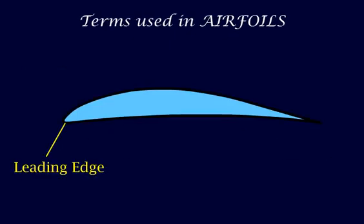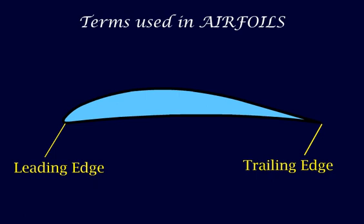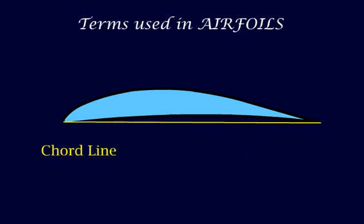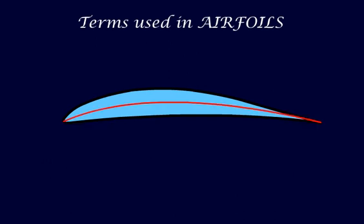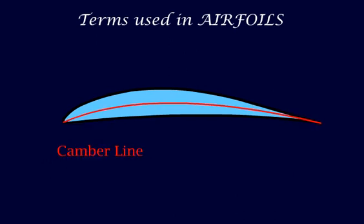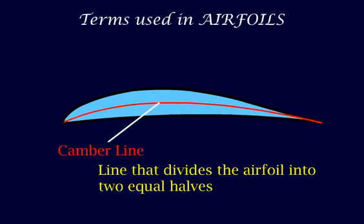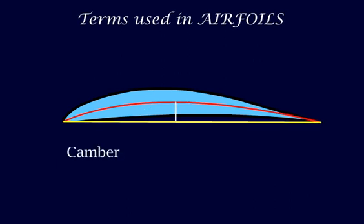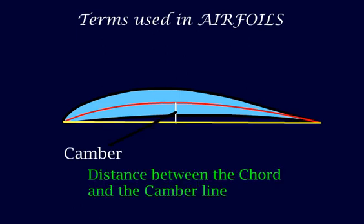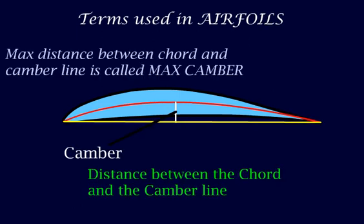The point at the front of the airfoil is called the leading edge. The point at the back is called the trailing edge. The line joining the leading and the trailing edge is called the chord line. The camber line is the line which divides the airfoil into two equal halves. The distance between the camber line and the chord line is called the camber, and the maximum distance is called the maximum camber.